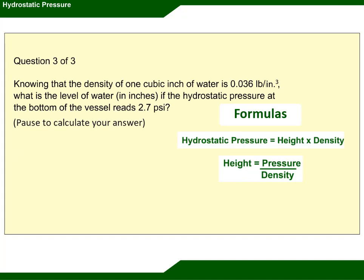Question 3: Knowing that the density of 1 cubic inch of water is 0.036 pounds per cubic inch, what is the level of water in inches if the hydrostatic pressure at the bottom of the vessel reads 2.7 psi?